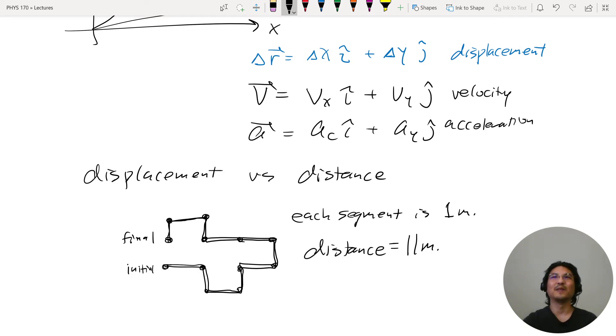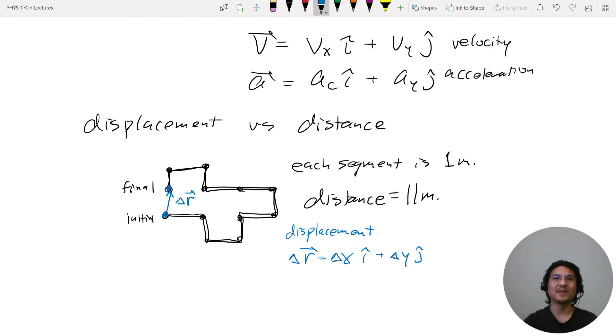Displacement is the vector. You started over here, you ended over here. This is your displacement. I'll call it delta R, your displacement. It's the vector, delta X, delta Y. So in the X direction, you went from zero to zero, basically, so zero. And in the Y direction, you went up one meter. So your displacement is one j. The magnitude of your displacement is one meter. So different.